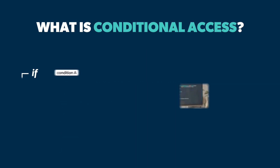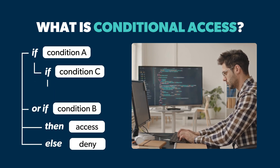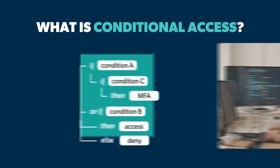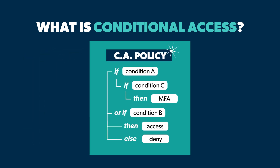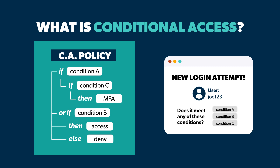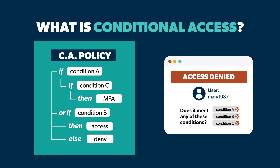Simply put, an IT admin will create one or more conditions that must be met before a user is able to access a certain resource. Once a conditional access policy is created, login attempts will then be evaluated against the specified conditions. If they are met, the user is granted access, but if they're not, the user is denied until the conditions are met.